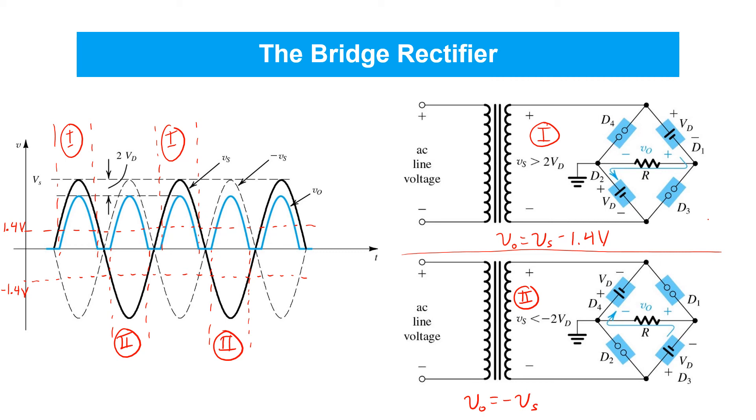That flips it around or rectifies it. But, we do lose the 1.4 volts across diodes D3 and D4 in this case for their forward voltage drops.